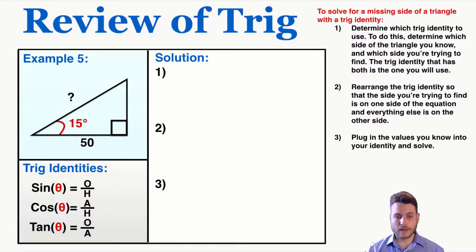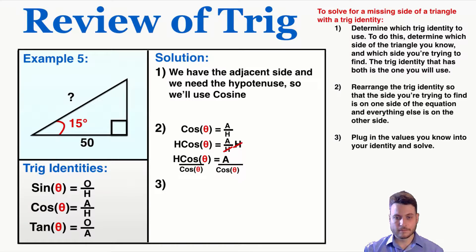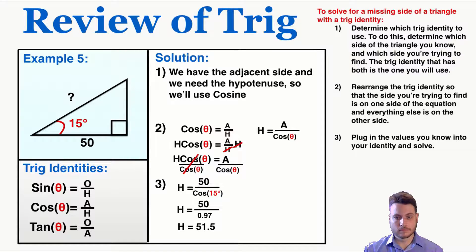Example 5: I'm trying to find the hypotenuse using the adjacent side, so cosine connects those. Rearranging cosine to get the hypotenuse by itself and plugging in my numbers gives me a hypotenuse of 51.5.